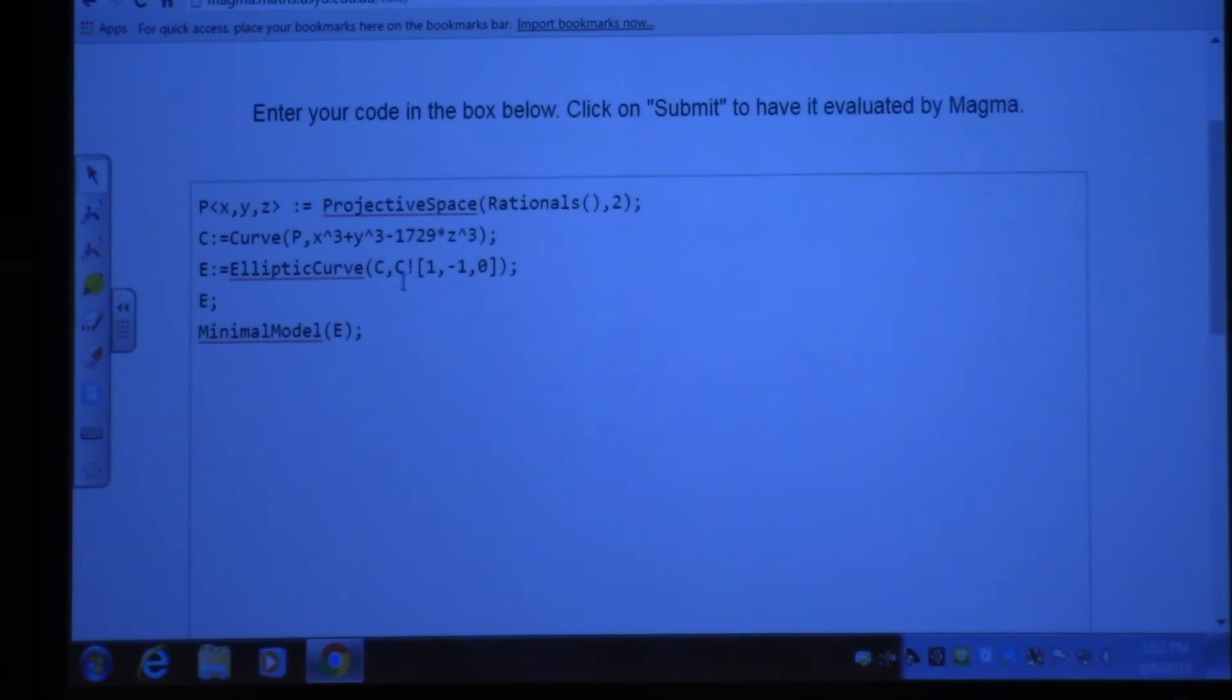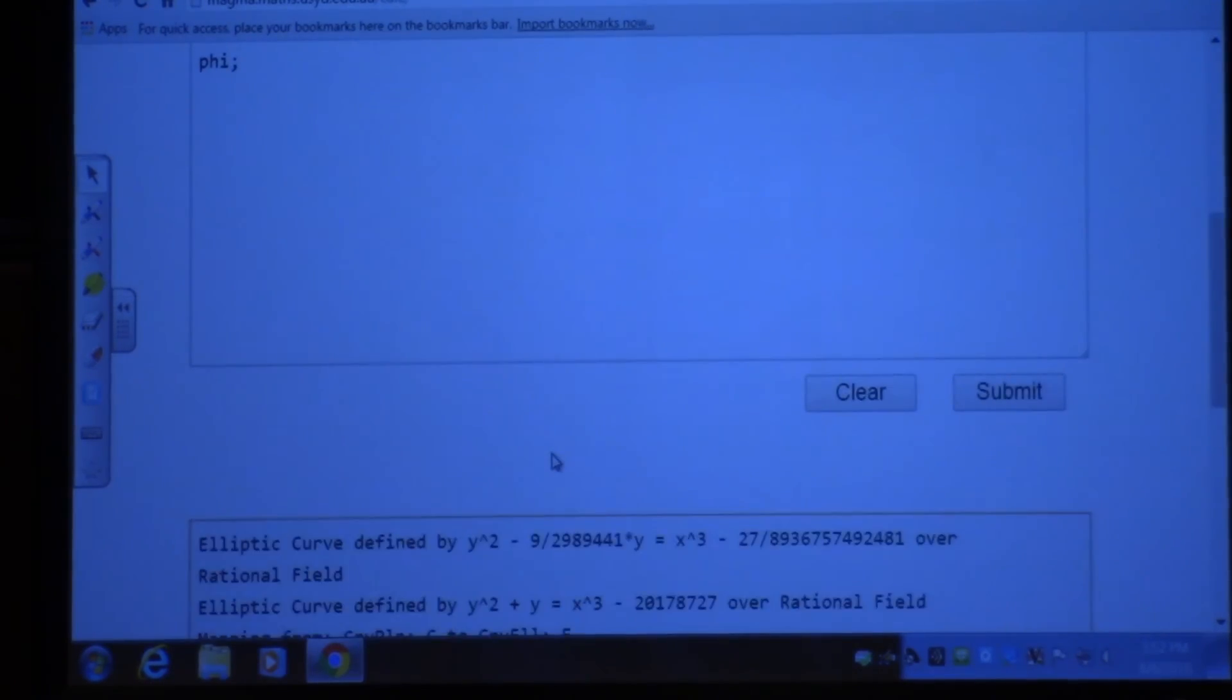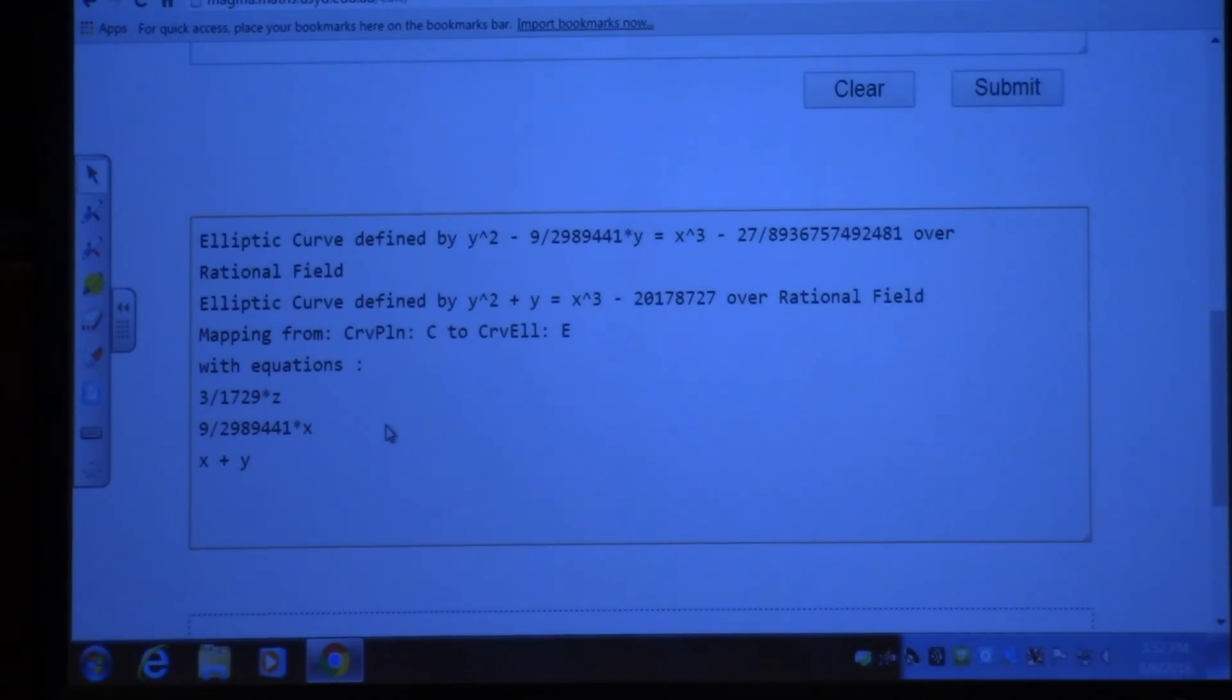This thing right here when I did that, it actually something was hidden that it actually also gave me the algebraic map that goes from one to the other. So now I can compute in the new curve, do math in there, and then send things back to the old curve and do computations like that back and forth.